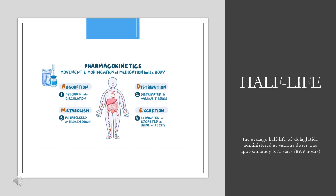Half-life. In a pharmacokinetic study of 20 healthy adults, the average half-life of dulaglutide administered at various doses was approximately 3.75 days (89.9 hours). This extended half-life allows for once-weekly dosing. Prescribing information indicates a half-life of approximately 5 days.